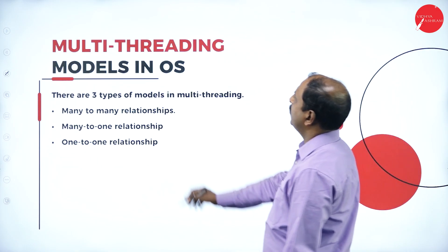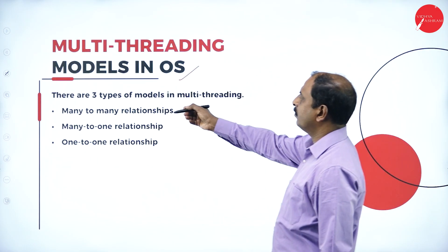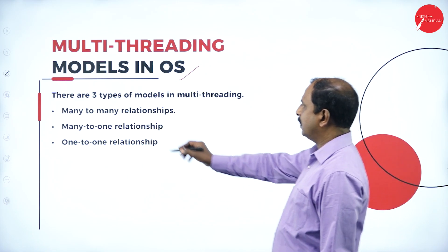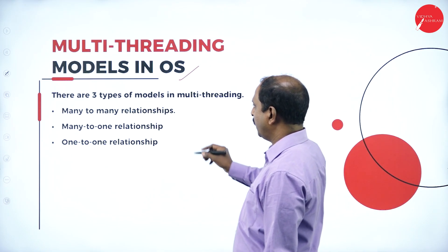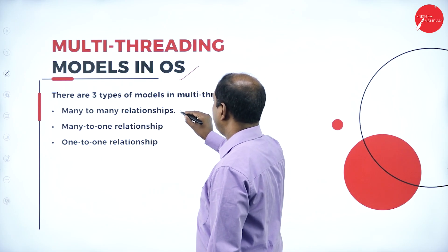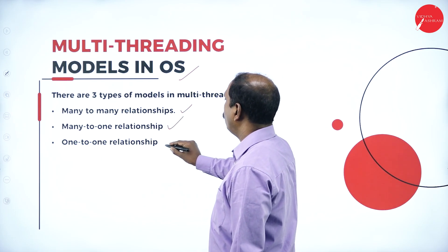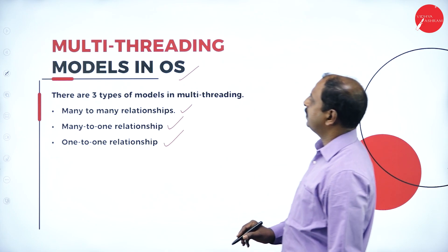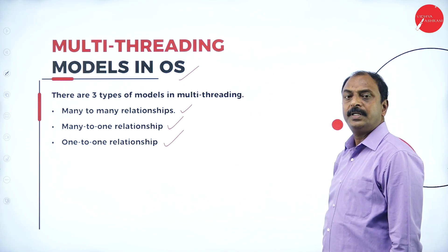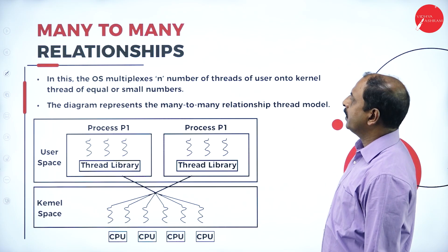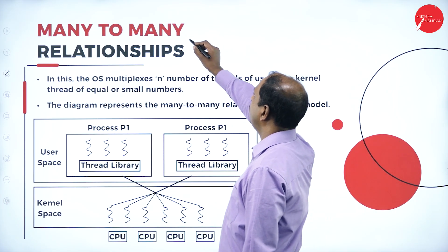The next concept is multi-threading models. There are three types of models in multi-threading: many-to-many relationship, many-to-one relationship, and one-to-one relationship.